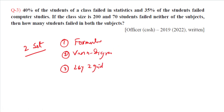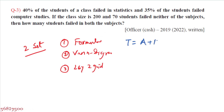Using the formula approach: Total equals set A plus set B minus both (the overlap), plus neither. Here, set A contains those who failed statistics and set B those who failed computer studies. The overlap represents students who failed both subjects, and 'neither' refers to those who failed neither subject.